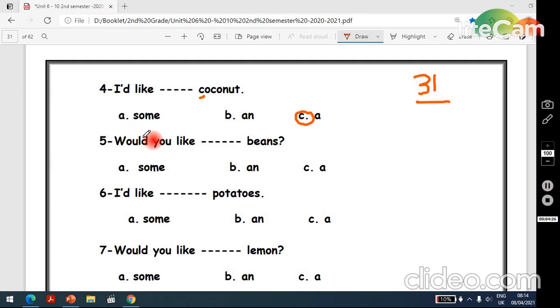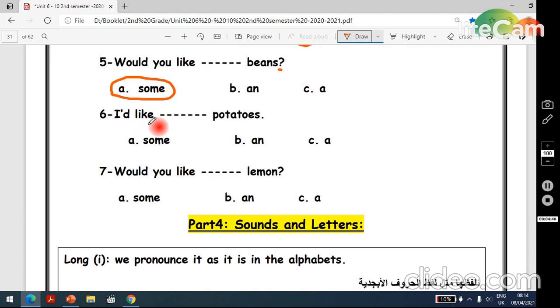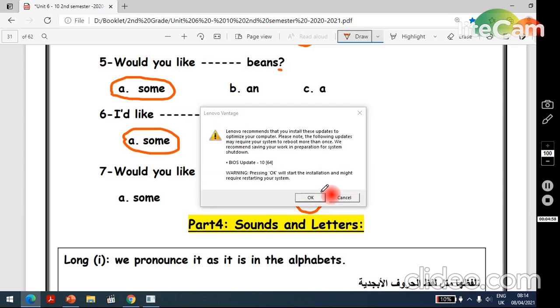Now five, what do you like? Beans. Beans, it's a plural. Some, an, or a? Yes, the answer is some. We use with a plural some. Now six, I'd like potatoes. Here we have potatoes. Some, an, or a? Yes, some. It's a plural. What about number seven? Would you like lemon? Some, an, or a? Yes, a. A, because it's singular.